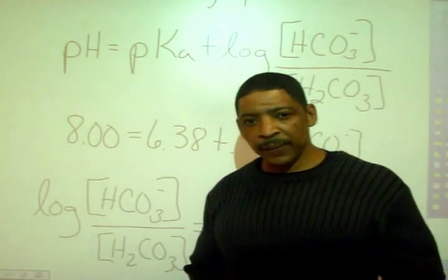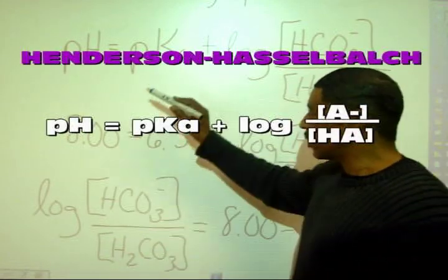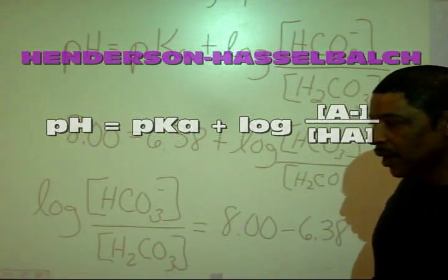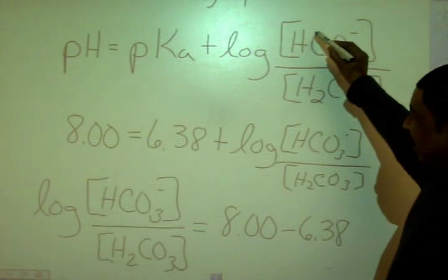At this point, we may use the Henderson-Hasselbalch equation to solve for the ratio of anion to acid.